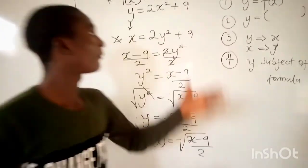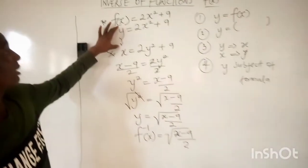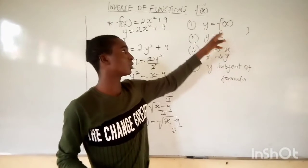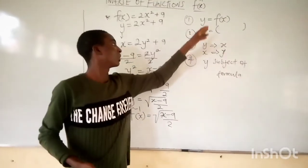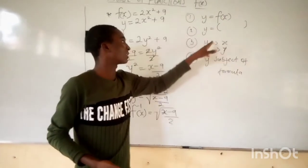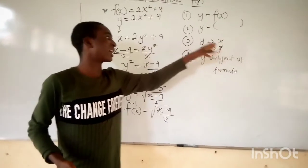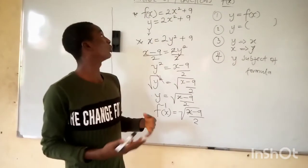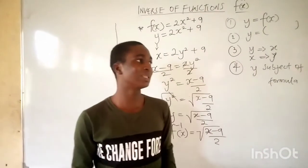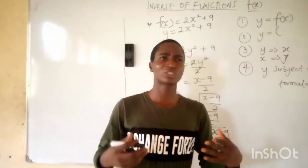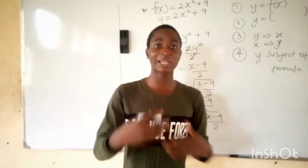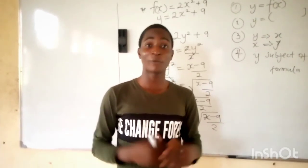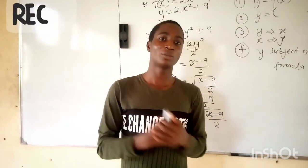The inverse of f(x) is equal to the square root of (x minus 9) over 2. If we follow the steps, we get the answer: replace f(x) with y, interchange x and y, then make y the subject of formula. With this, you can get the inverse of a function. In our next class, we will be dealing with more problems on the inverse of a function — ones that deal with fractions. We'll bring the shortest method for you. Thank you for watching today's video. Don't forget to subscribe and like our YouTube page. God bless you.